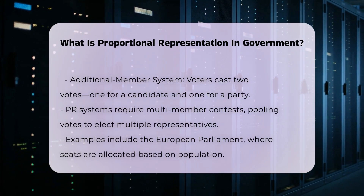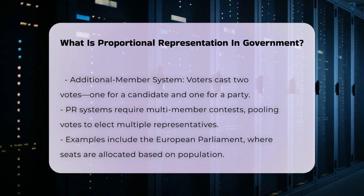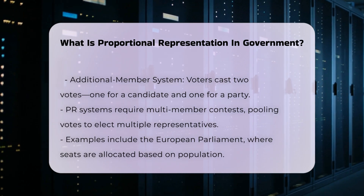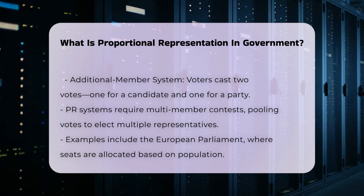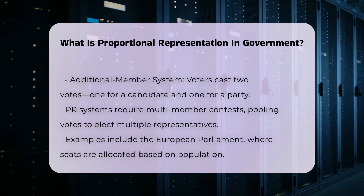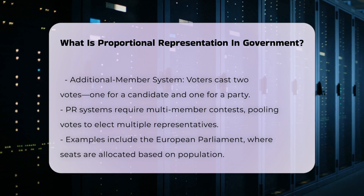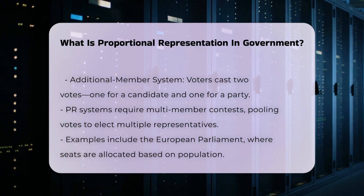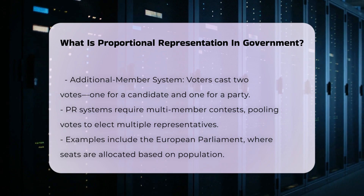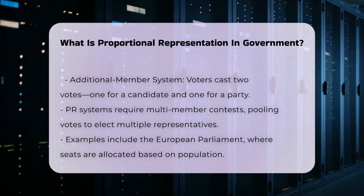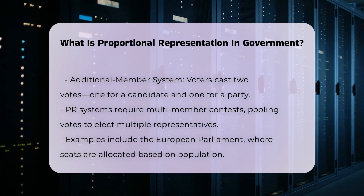Key Characteristics: Proportional Representation systems require multi-member election contests, where votes are pooled to elect multiple representatives at once. This can be done in multi-member voting districts or even countrywide elections. For instance, in the European Parliament, each member state has a number of seats roughly proportional to its population, and elections must be held using a proportional representation system.